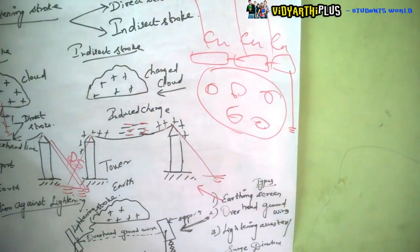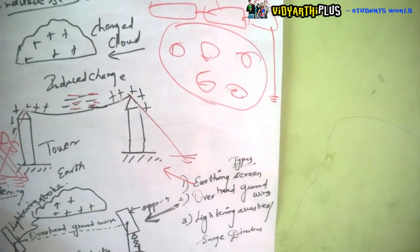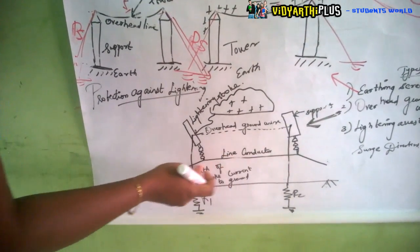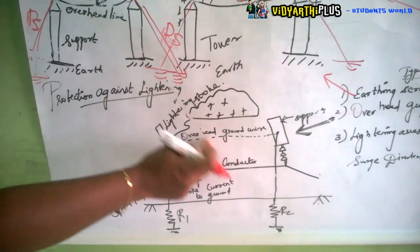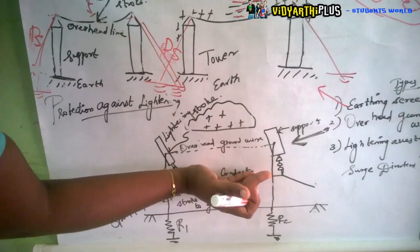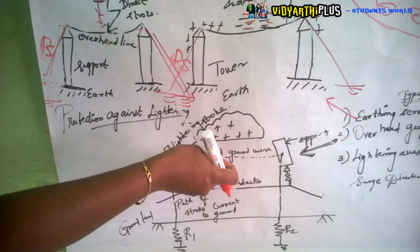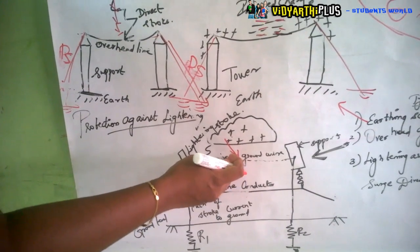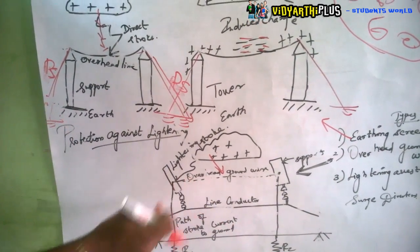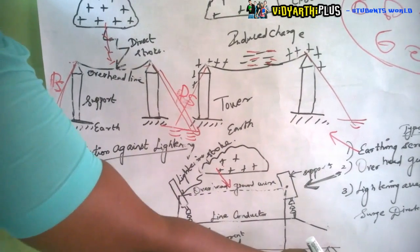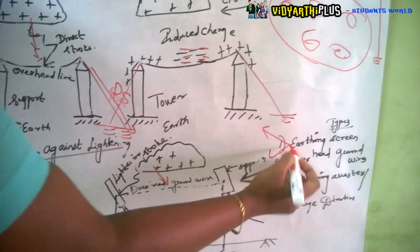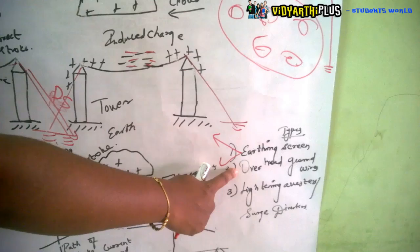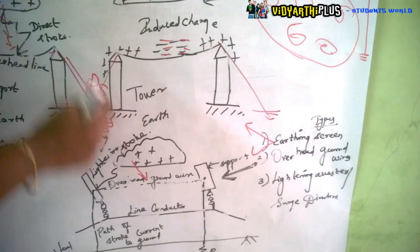The second method is overhead ground wires. A ground wire is placed above the line conductor between two towers. If lightning comes from the cloud, it strikes the overhead ground wire instead of the line conductor. Since the overhead ground wire is connected to ground, the charges are immediately directed to earth without affecting the line conductor. This method protects the transmission line against lightning.